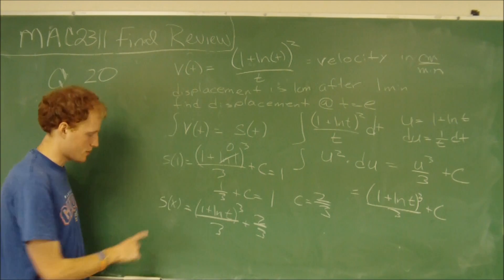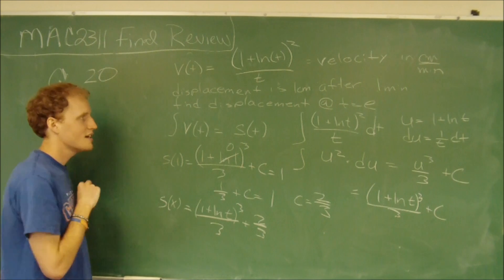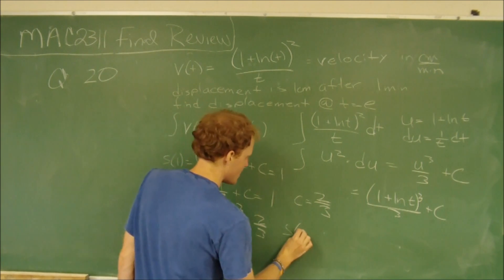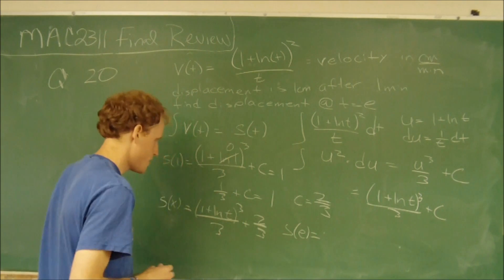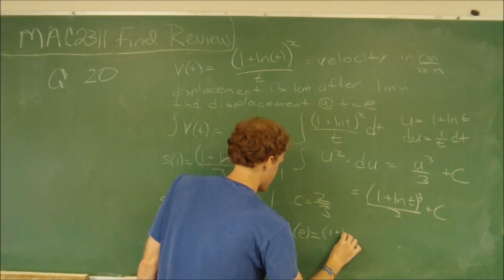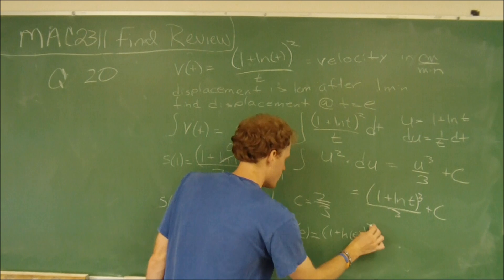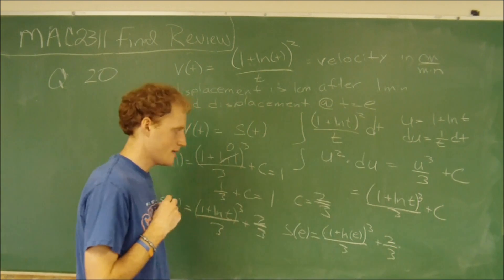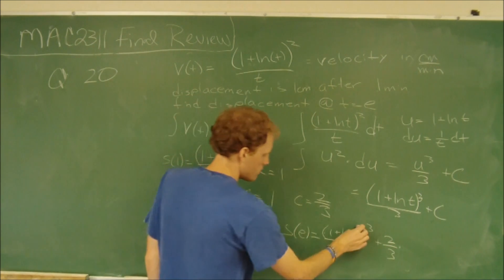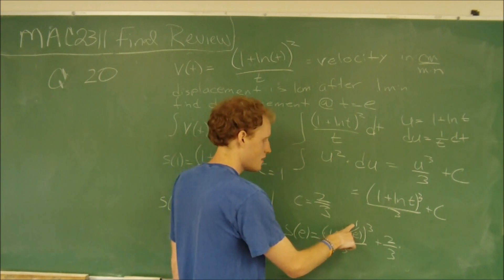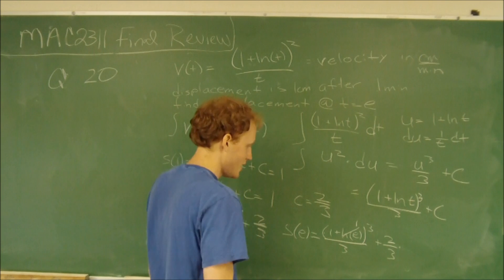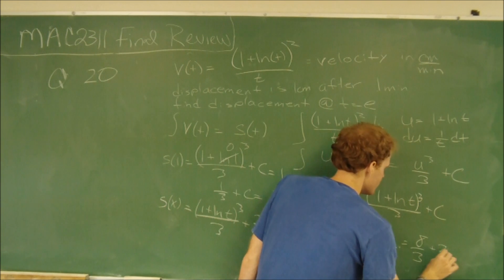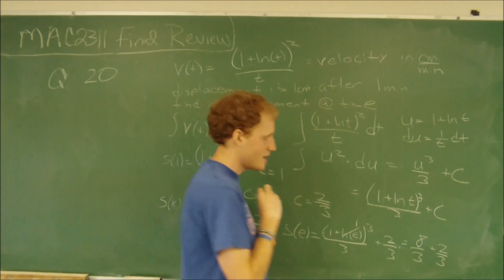Our position function is 1 plus the natural log of t, cubed over three, plus two thirds. Since we're looking for the displacement after t equals e, we plug in e. The position at e equals 1 plus the natural log of e, that quantity cubed over three, plus two thirds. The natural log of e is 1, so we have 1 plus 1, which is 2. Two cubed is 8, giving us 8 thirds plus 2 thirds, which equals ten thirds. That is the answer.